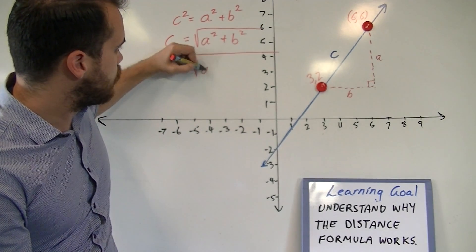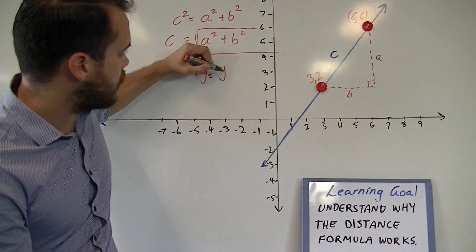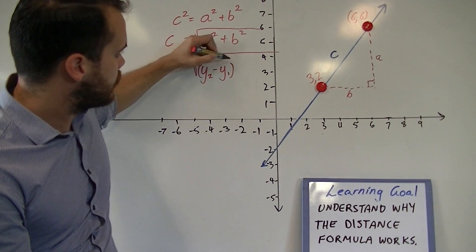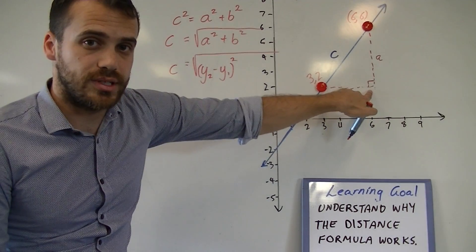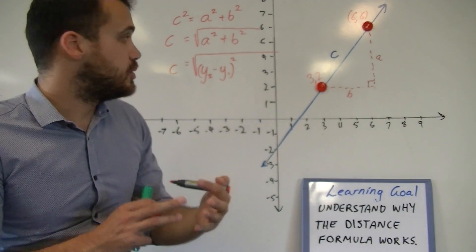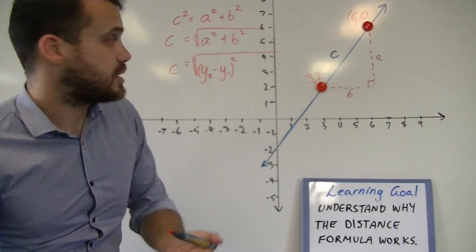Now, that's going to be Y2 minus Y1 squared. Similarly, if we want to know this length, this length of B, we can use X2 minus X1.